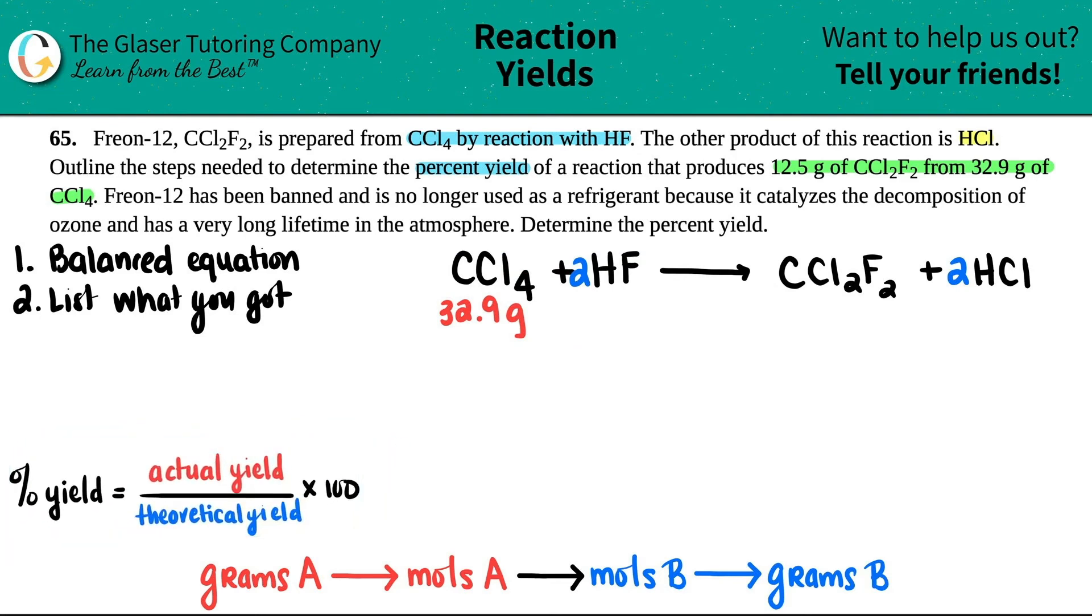And if we could just write a little bit of notes here, percent yield is always just equal to actual yield, what you actually got in your experiment, divided by what should be on paper. The actual yield that was actually produced was 12.5 grams, and that's of CCl2F2, the Freon-12. So if we want to find out our percent yield, the only thing that we need is we need to know theoretically or on paper how many grams of the CCl2F2 we need. So I need to find that. This is like a question mark. I need to find that many grams of CCl2F2.